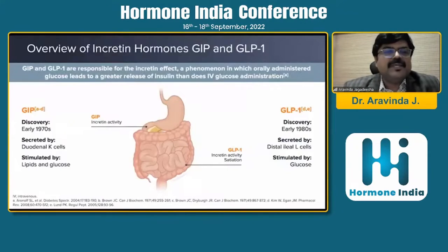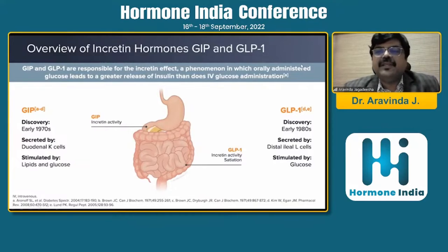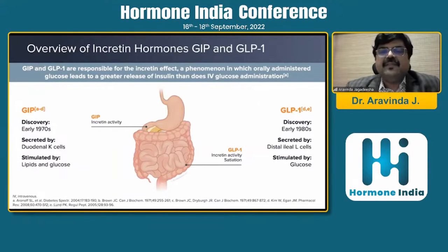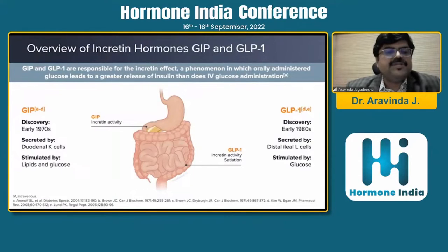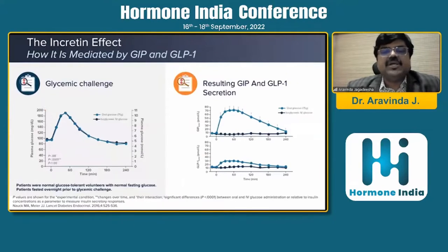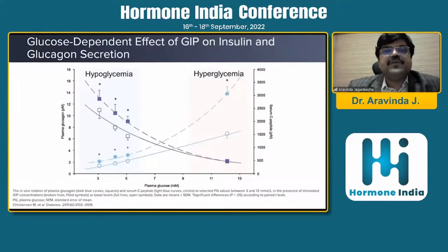Greetings to all of you from Bangalore. If you take the overview of incretin hormones, GIP and GLP-1 are responsible for the incretin effect — a phenomenon in which orally administered glucose leads to a greater release of insulin than does IV glucose administration. GIP was discovered in 1970, secreted by the duodenal K cells, and stimulated by lipids and glucose. GLP-1 was discovered in the early 1980s, secreted by distal IL cells, and stimulated by glucose.